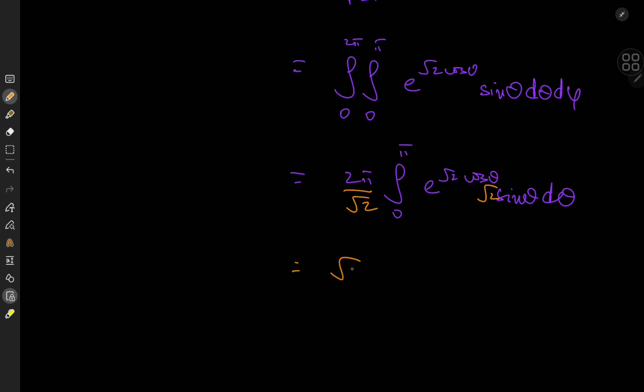So 2 over root 2, this is root 2 times pi times the evaluation of this integral results in e to the negative e to the root 2 cosine theta.